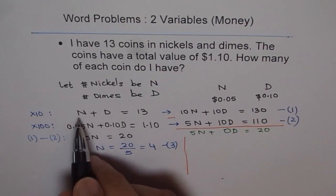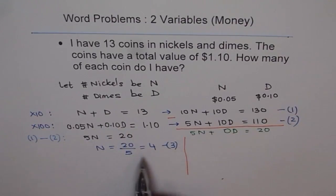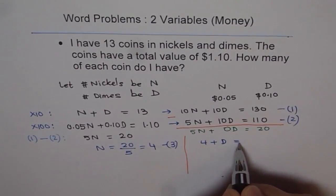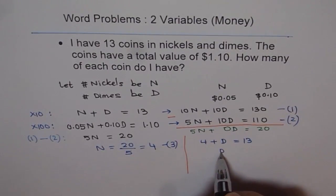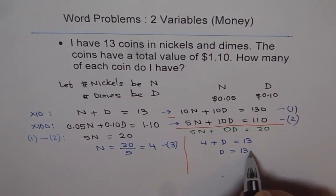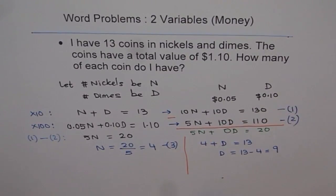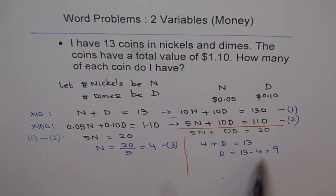So let's substitute this value of 4 in the first equation and find what is the number of dimes. So we know n plus d is 13, n is 4. So 4 plus d equals to 13 or d is equals to 13 minus 4. That gives us 9. And therefore, we have 4 plus 9, that means 13 coins. So it makes sense.